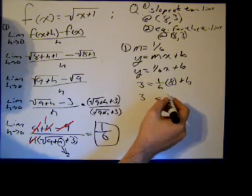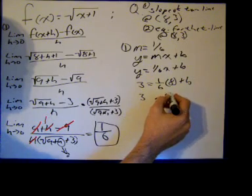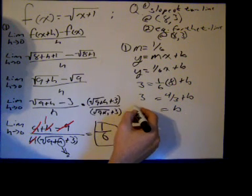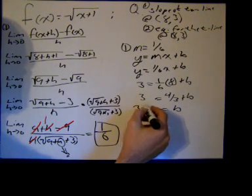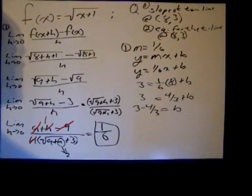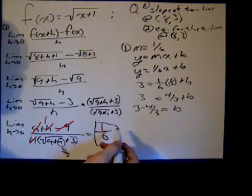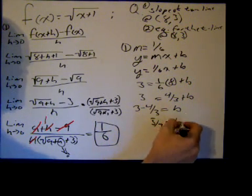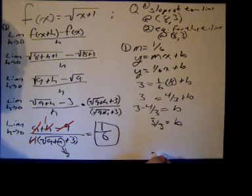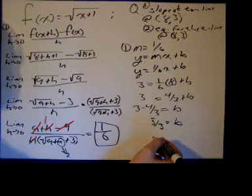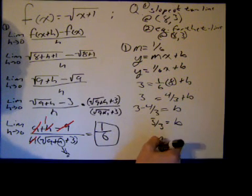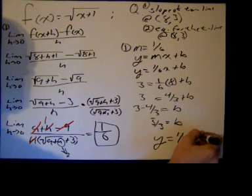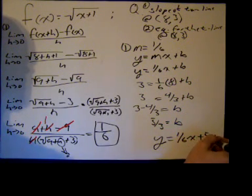We get 3 = 8/6 is 4/3 plus b. So we get b is equal to 3 - 4/3. Getting a common denominator of 3 over here, we get 9 - 4 is 5/3 equals b. So the equation of the tangent line at point (8, 3) of the function f(x) = √(x+1) is y = (1/6)x + 5/3.